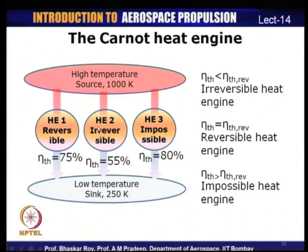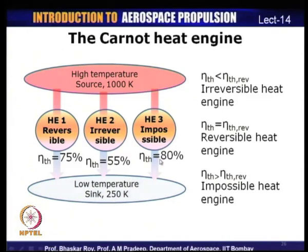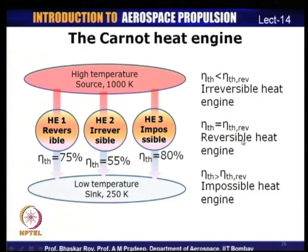To illustrate: with a source at 1000 K and sink at 250 K, a reversible cycle efficiency is 1 − 250/1000 = 75%. If there are three heat engines operating here — engine 1 is reversible with efficiency 75%, engine 2 is irreversible with efficiency 55% (which is possible, being less than the Carnot efficiency), and engine 3 claims efficiency 80% (which is impossible, exceeding Carnot efficiency). So: thermal efficiency less than the reversible efficiency means irreversible; equal to reversible efficiency means reversible; and greater than reversible efficiency means impossible.